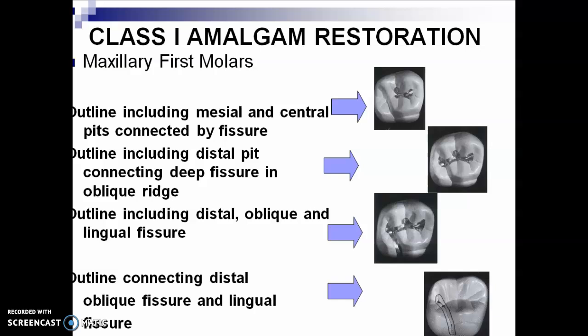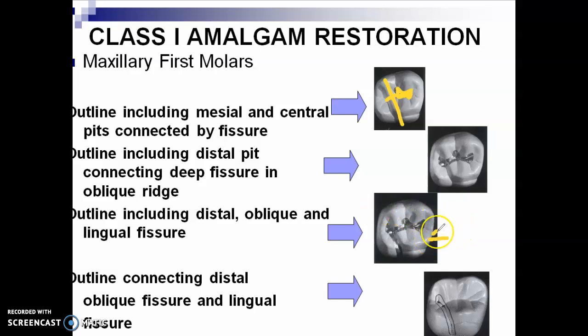Class 1 amalgam restoration on maxillary molars. Sometimes the caries would not cross the oblique ridge, then you just have to prepare the occlusal outline like this. If it would cross the oblique ridge, then you have this preparation. If it would include the lingual portion, then you have a compound Class 1, like this one.